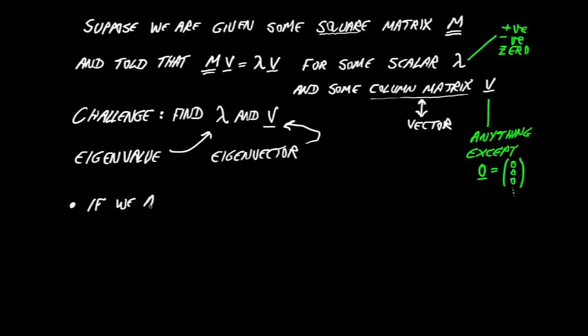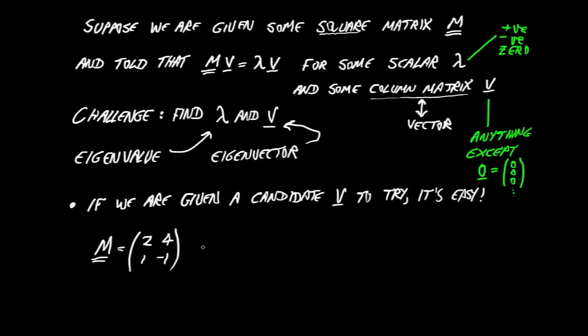Okay, so first off, let's notice that if we are given a candidate, a possible eigenvector V to try, perhaps for a multiple choice, then it's easy to test. We'll just go ahead and try it. So here's a square matrix, a 2 by 2, 2, 4, 1 minus 1. And suppose we write down V is equal to (1, -1). And this is suggested as a possible eigenvector.